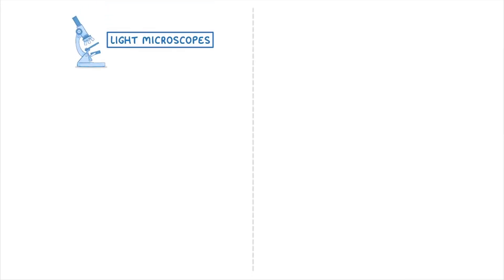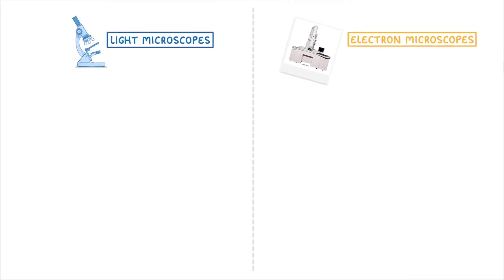In this video, we're going to look at the differences between light microscopes and electron microscopes. If you can imagine a microscope in your head, you're probably thinking of a light microscope, because these are the ones that you can use in the classroom, and what we think of as conventional microscopes.